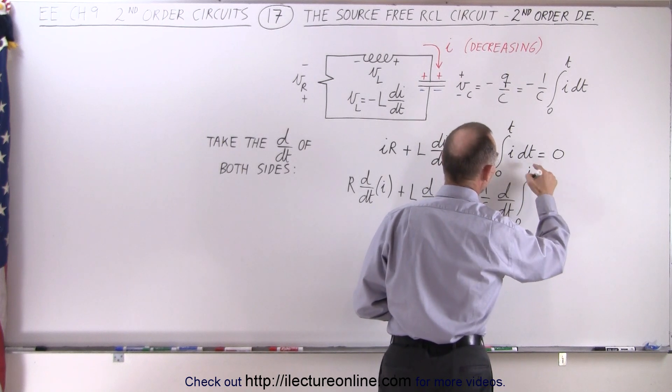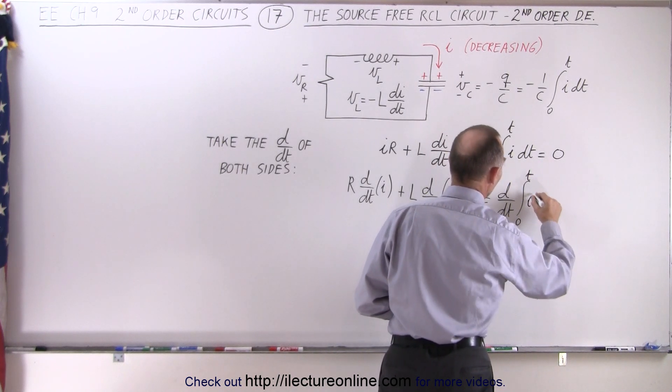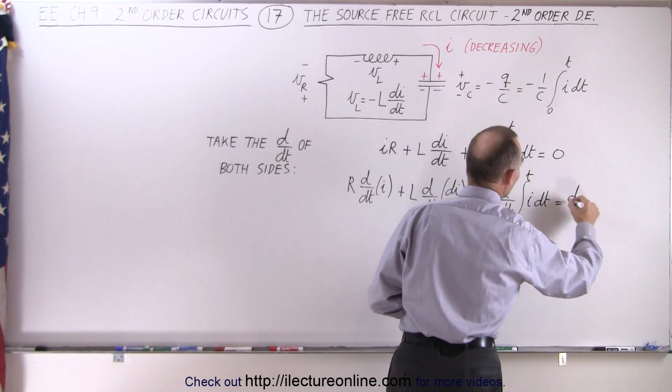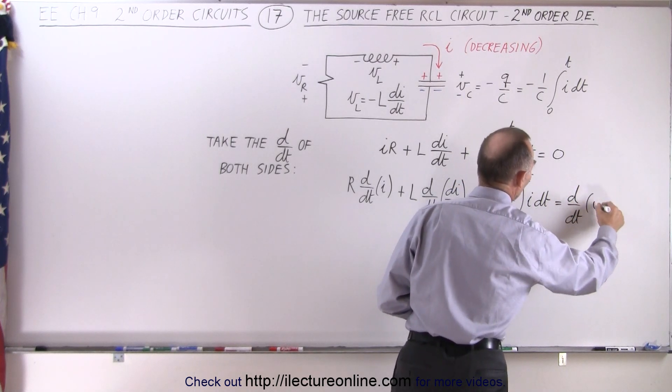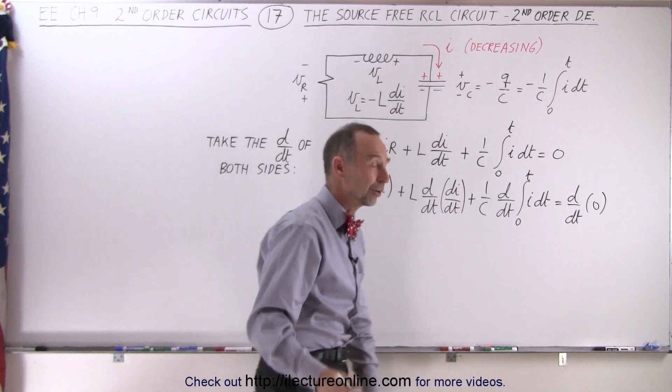Oops, that should be T, not I - T times I dt. That equals the derivative of the right side with respect to time. Of course, the derivative of zero is still going to be zero.